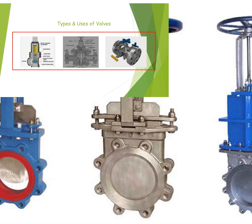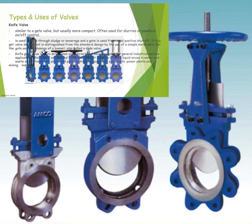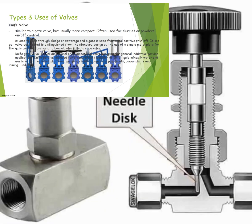Knife valves are similar to gate valves but usually more compact. Used for slurry or powders, on-and-off control is used to slice through slides of sewerage. A gate valve design is distinguished from the standard design by the use of a simple metal plate for the gate and the absence of the bonnet. Also called a slice valve.